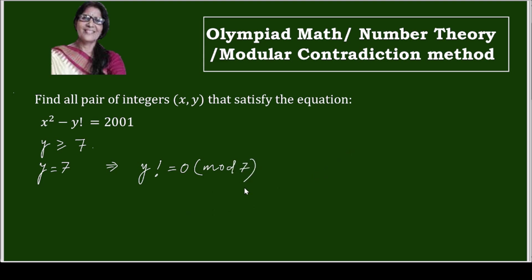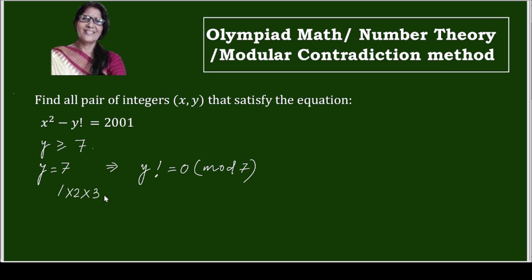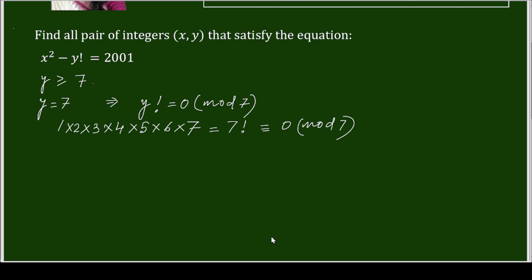Yes, because whenever you will get 1, 2, 3, 4, 5, 6, multiply 7, this is your 7 factorial. So it is divisible by 7, so it is your congruent to 0 modulo 7. Even if it will be more than that 8 factorial still 7 is there, so it will be 0 modulo 7.